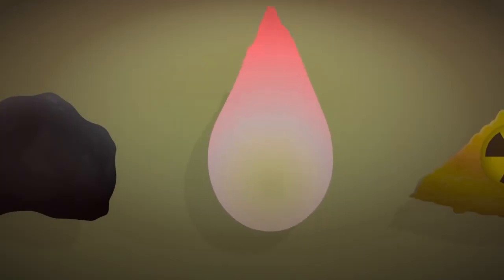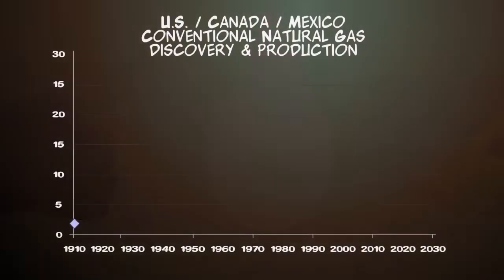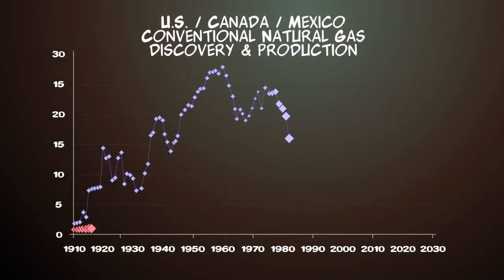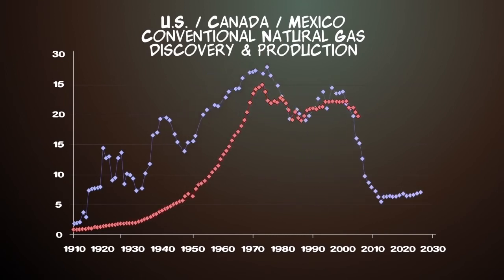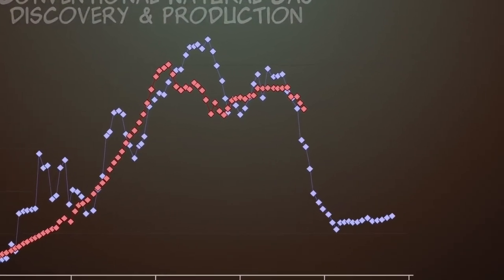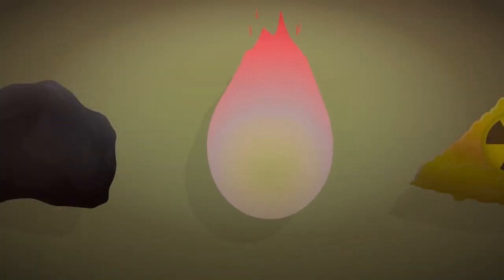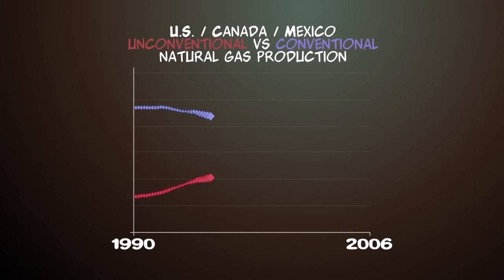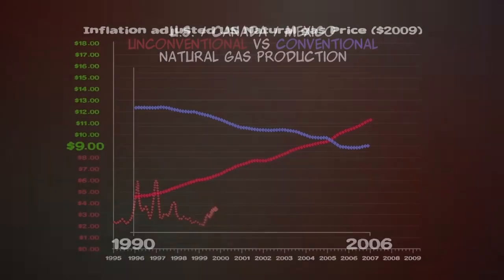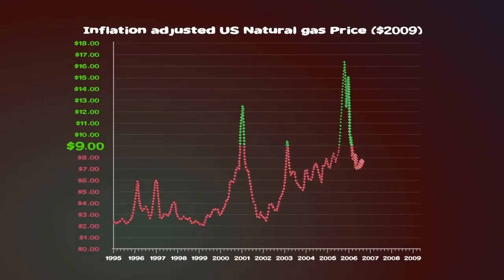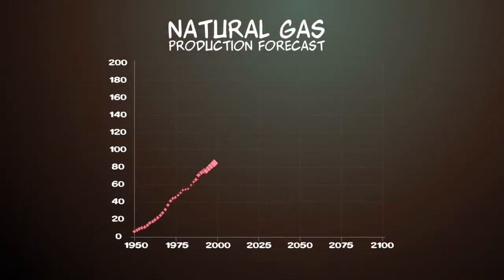Natural gas is often found alongside oil and coal. North American discovery of conventional gas peaked in the 1950s and production peaked in the early 70s. If the discovery graph is moved forward by 23 years, the possible future of North American conventional natural gas production is revealed. Recent breakthroughs have allowed the extraction of unconventional natural gas, such as shale gas, which might help offset decline in the years ahead. Unconventional natural gas is controversial, as it needs high energy prices to be profitable. Even with unconventional gas, there may be a peak in global natural gas production around 2030.